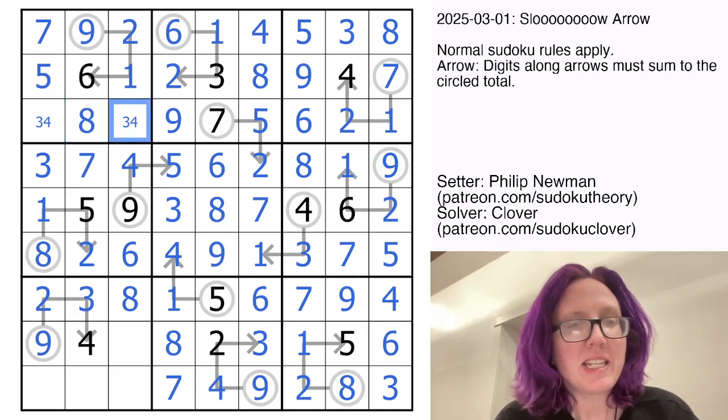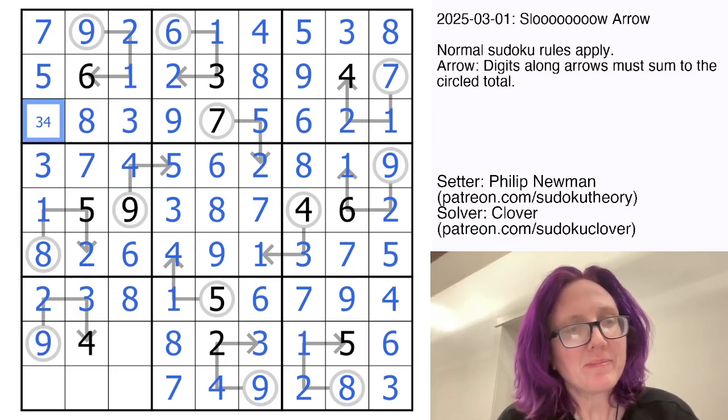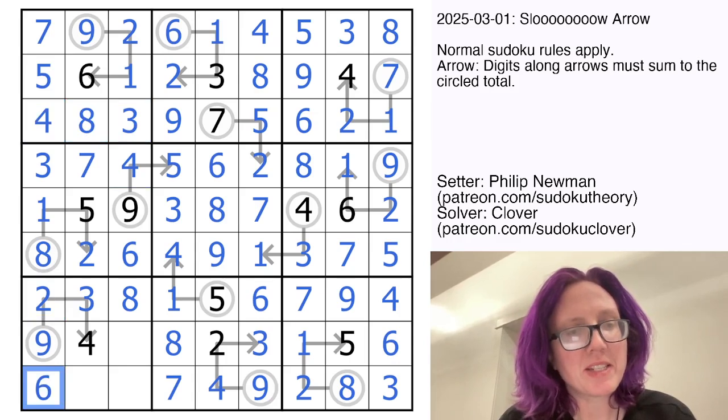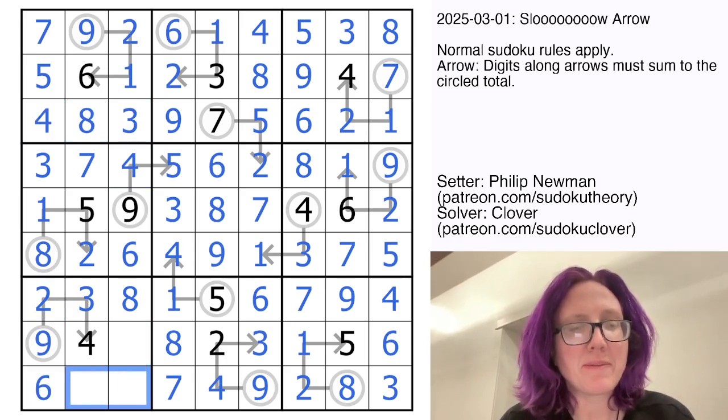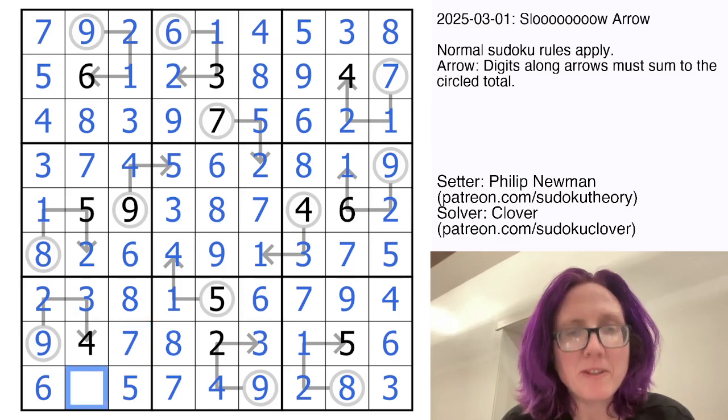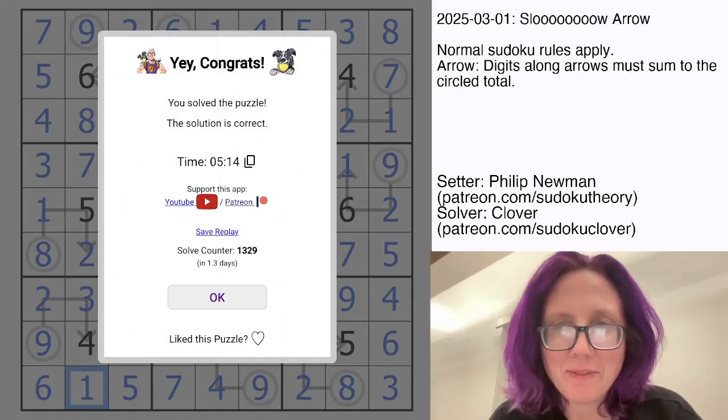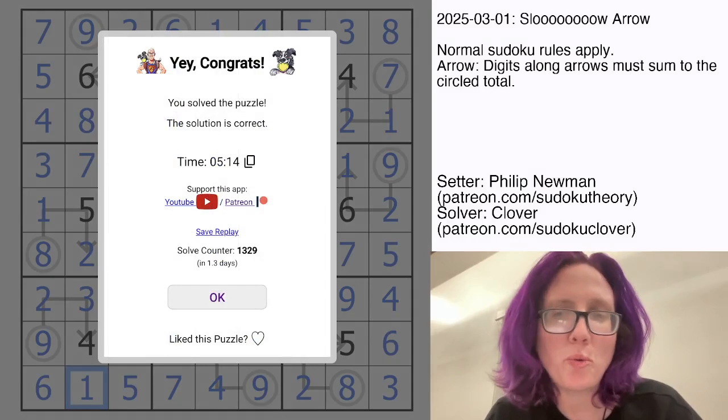And that can't be a four now. And what do I need here? Six. And then I need one, five, and seven to finish this region. Five, and one. And that is how you solve Philip Newman's lovely slow arrow.